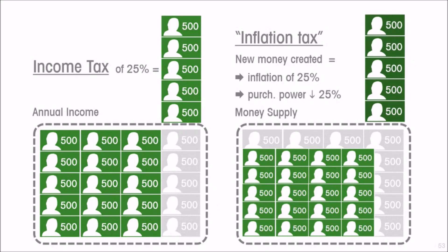So we end up with the same outcome. If the government uses money creation, we end up with the government having $2,500 to spend and private citizens having only the equivalent — 25% less purchasing power than they did before — even though they still have $10,000 of nominal money. This is why economists use the term 'inflation tax.' It is not an actual tax at all, but it operates like a tax in that the government gets additional money and citizens end up having less.